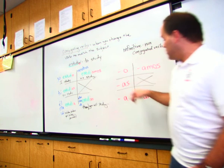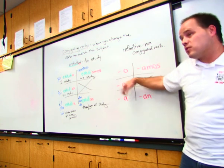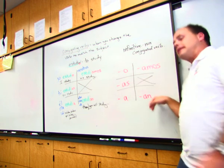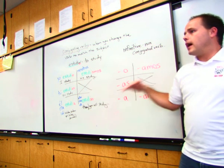Students tend to get these two mixed up a lot. Because this ends AS, so you think plural, so it must be this one, but it's not. So O, AS, A, AMOS, AN.